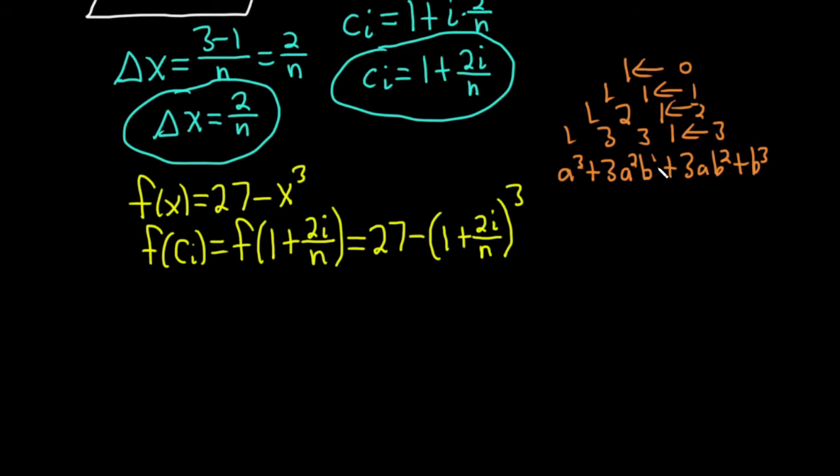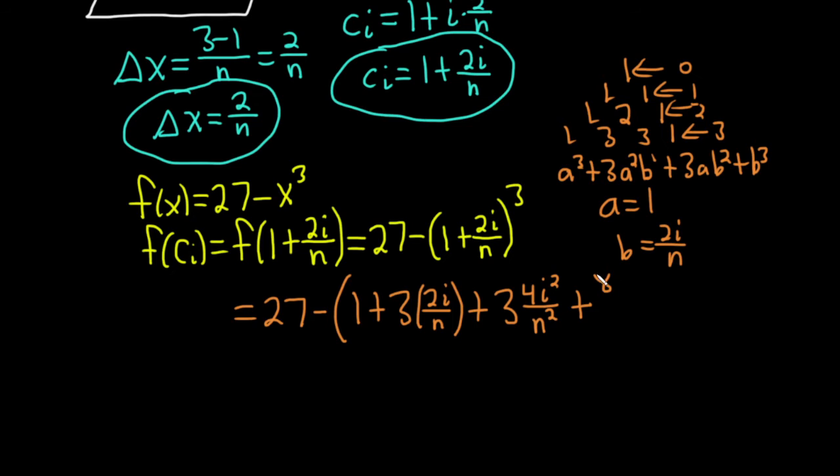So now we're going to apply it to this. This is equal to 27 minus parentheses. a is 1, b is 2i over n. So it's 1 plus 3 times 2i over n plus 3 times 4i squared over n squared plus 8i cubed over n cubed.